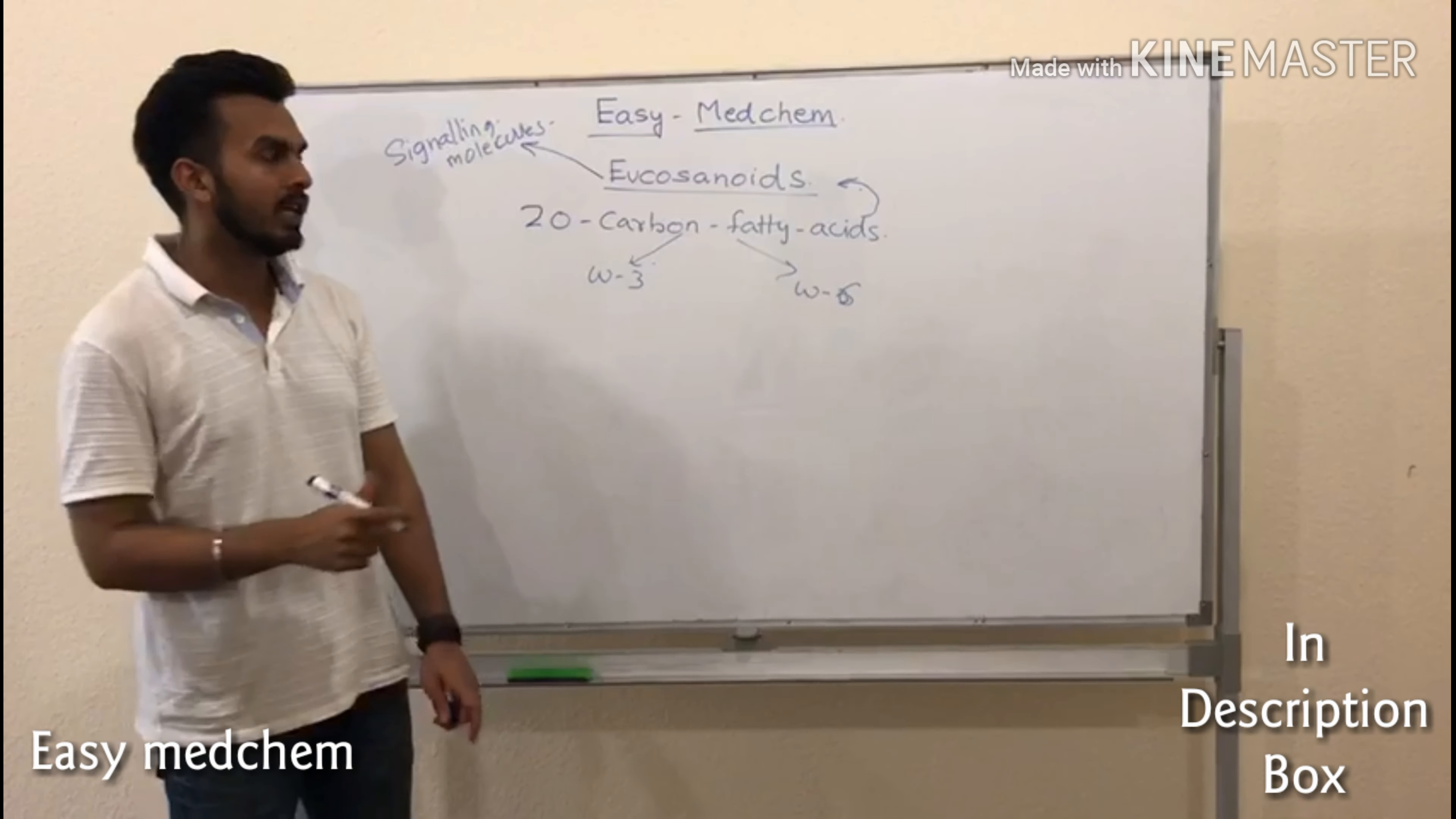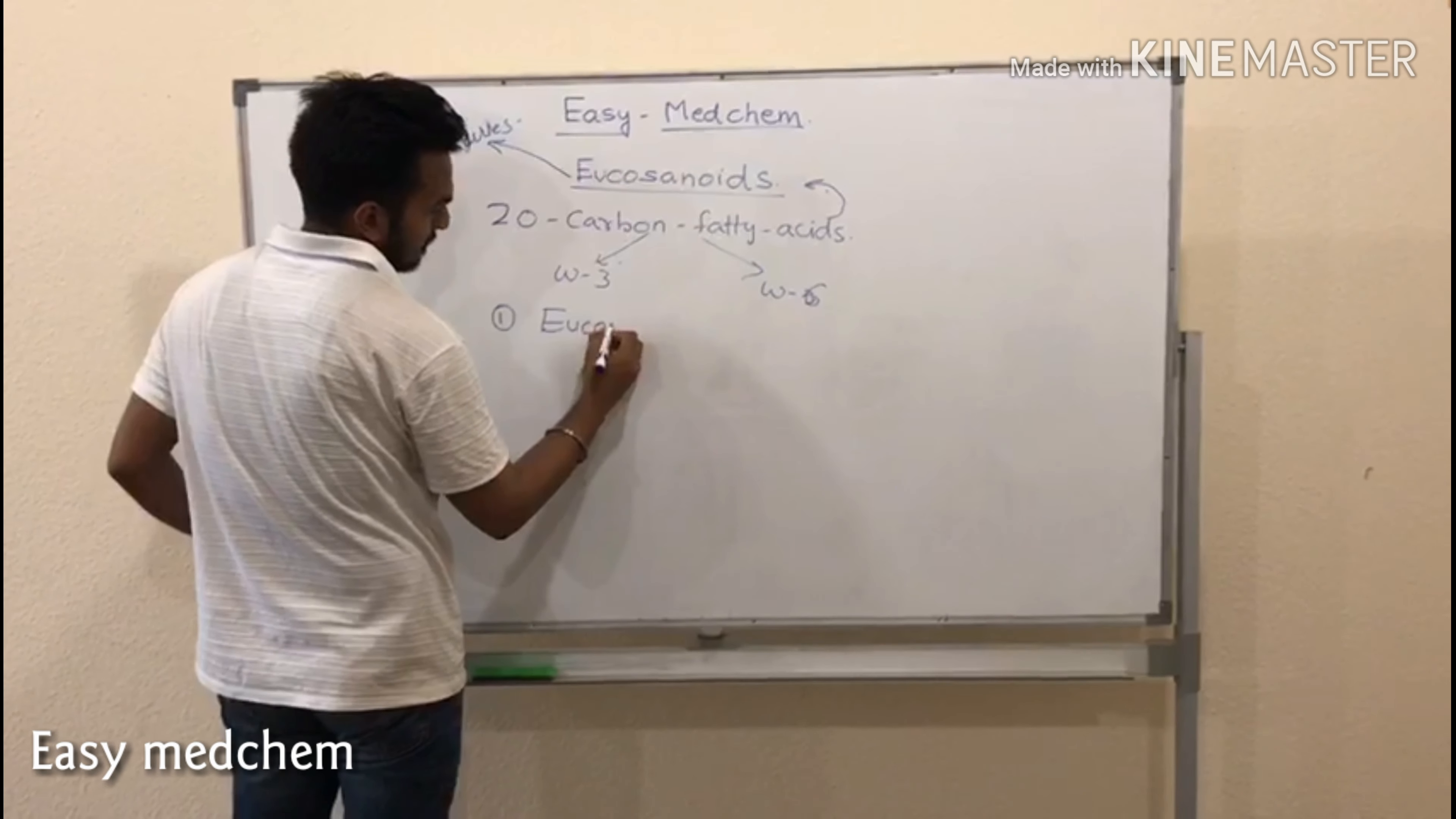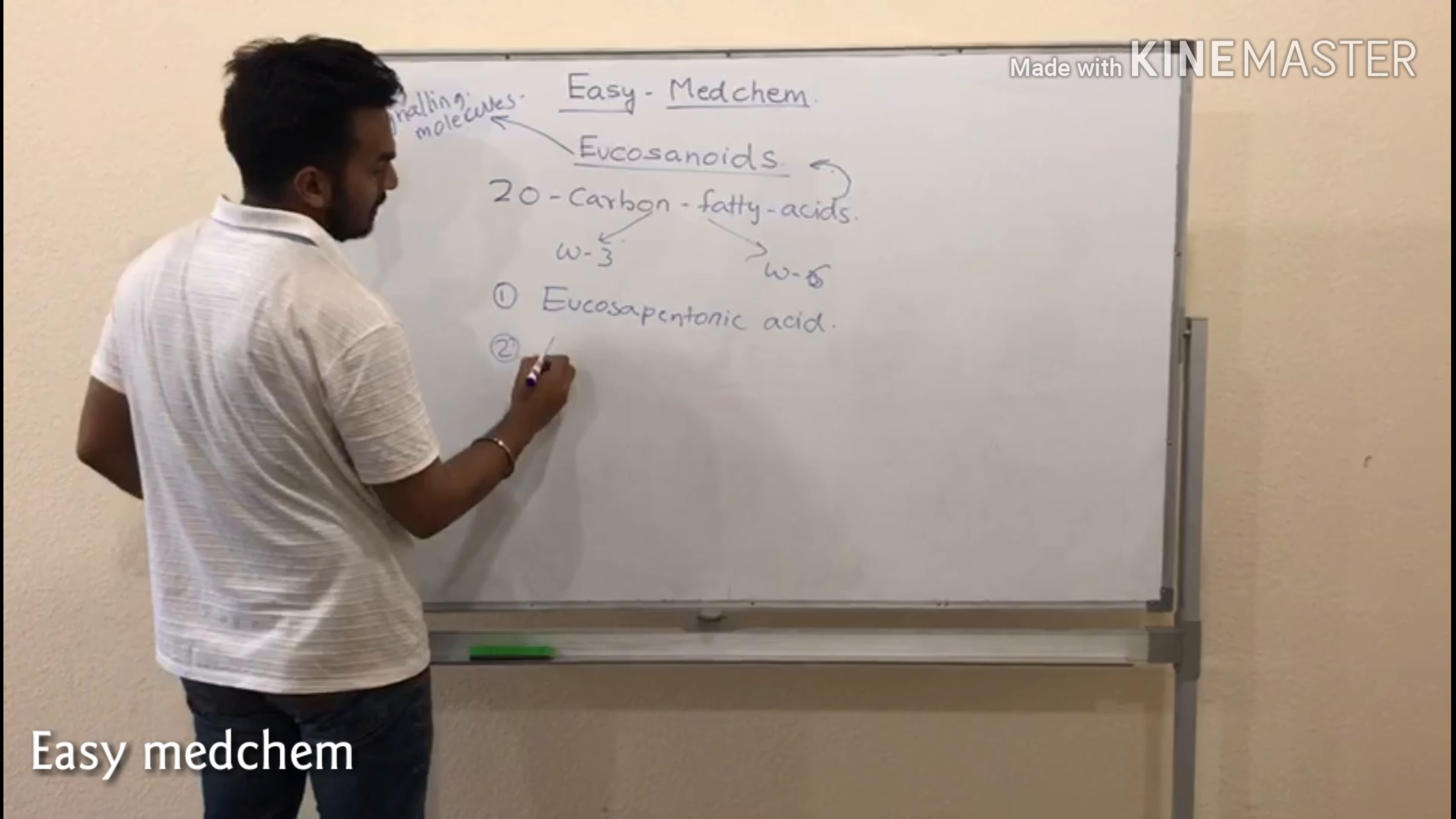Generally, we are having three types of eicosanoids which are medically important. The first one is eicosopentanoic acid. Second one is arachidonic acid.